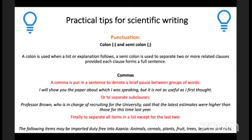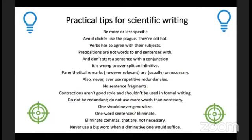On punctuation: a colon is used when a list or explanation follows; a semicolon is used to separate two or more related clauses, provided each clause forms a full sentence. If you're making a list, start with a colon and break up the components with semicolons. A comma denotes a brief pause between groups of words or separates sub-clauses. You can also use commas or semicolons to separate items in a list, with the exception of the last two.